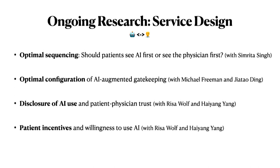Another area is optimal configuration for AI-augmented gatekeeping, with Michael Freeman and Jato Dean — both in Singapore. This was inspired by Singapore's diabetic retinopathy screening system. Singapore already has a very high screening rate compared to the meager 15% in the U.S., but they're not satisfied and are asking what happens to the remaining 10% who haven't been screened. The question is whether to use a pure AI system, pure physician system, or a hybrid, and careful analysis reveals very different findings from what might be expected.